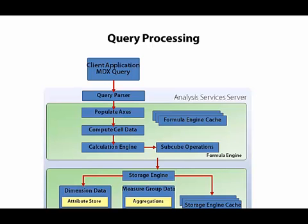If the data is not in the storage cache, then the next place to look is in the aggregations. This is the next best place for Analysis Services to retrieve data, because it can be very fast. But if the data is not there, it has no choice but to get the fact data, which can be a slower operation when we have millions and millions of rows.